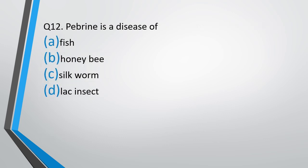Question number 12. Pebrine is a disease of fish, honeybee, silkworm, or lac insect. The correct answer is option C, silkworm.